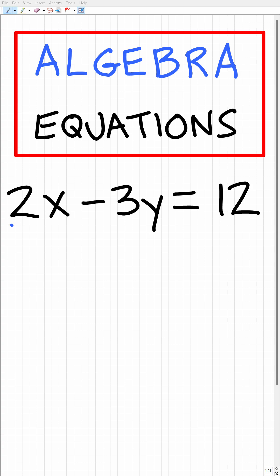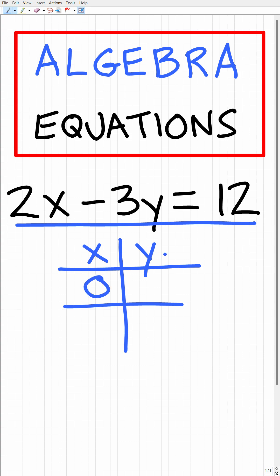The easiest way to graph this linear equation is to find the x-y intercepts, the points that cross through the x and y axis. We're going to set up a quick table like this and put a 0 for x and a 0 for y.